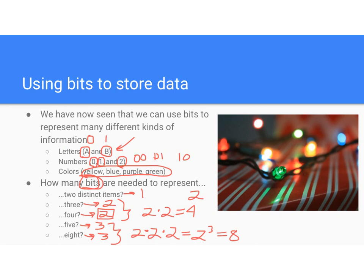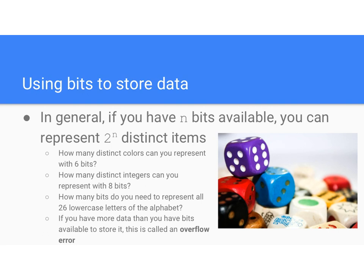In general, if you have n bits available, you can represent two to the n distinct items. For example, six bits can represent two to the sixth distinct colors, and eight bits can represent two to the eighth distinct integers. If you want to represent all 26 lowercase letters of the alphabet, you need two to the n to be greater than 26.